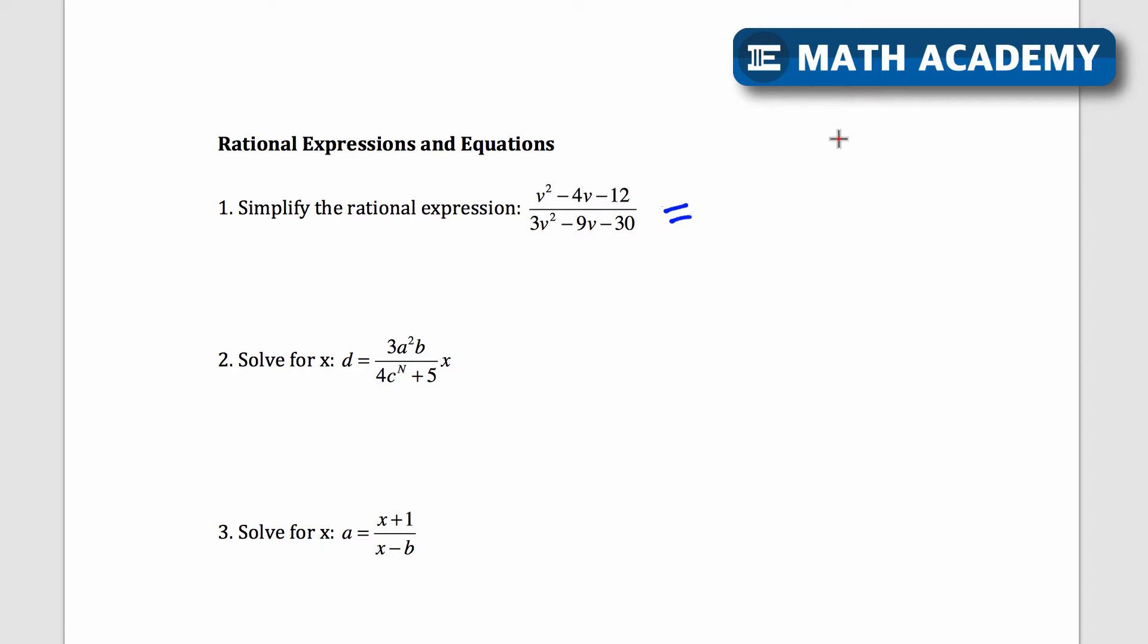I think I can use, let me just write this out. So negative 12 is going to be 1 and 12. And since it has to add up to negative, the larger number is going to be negative. And then we have 2 and 6 and we have 3 and 4. So I'm putting negatives on all the larger ones. Looks like 2 and negative 6 will add up to negative 4. So that becomes v plus 2 times v minus 6 on the top.